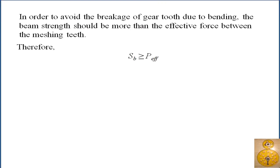To avoid breakage of the gear tooth due to bending, the beam strength Sb should be greater than the effective force between the meshing teeth, P_effective. The condition is: P_effective < Sb. How to find P_effective will be covered in the next lecture.